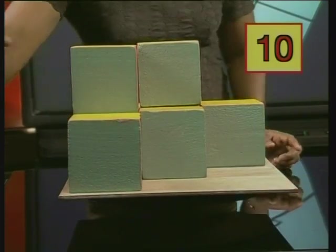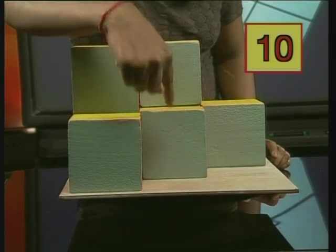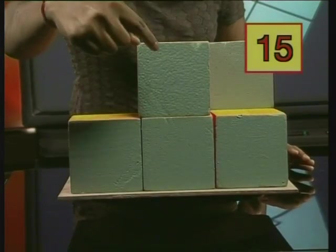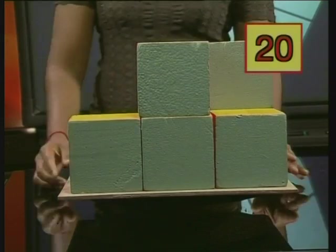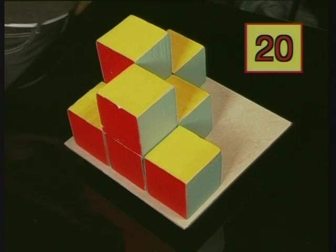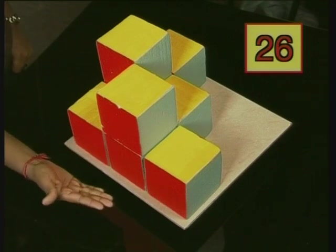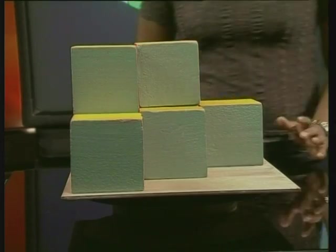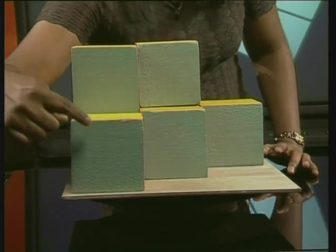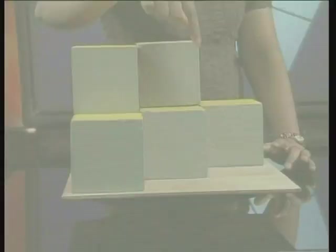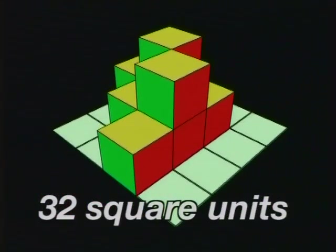Now let's have a look at the side view: one, two, three, four, five surfaces. And the other side? One, two, three, four, five. One, two, three, four, five, six faces on the top view. But don't forget about the bottom faces as well — it makes sense that there will be six surfaces on the bottom view. If we add them all together, we get 32 faces. Now if we consider one square as our measuring unit, and all the faces are made of squares of the same area, we can say that the total surface area is 32 square units.